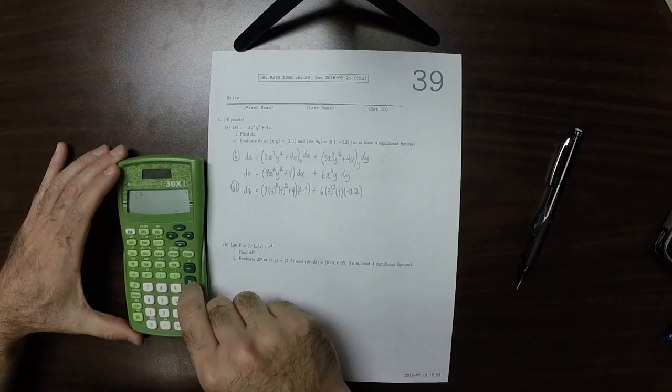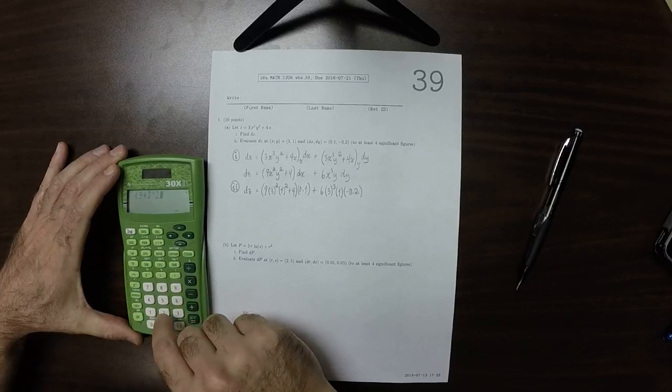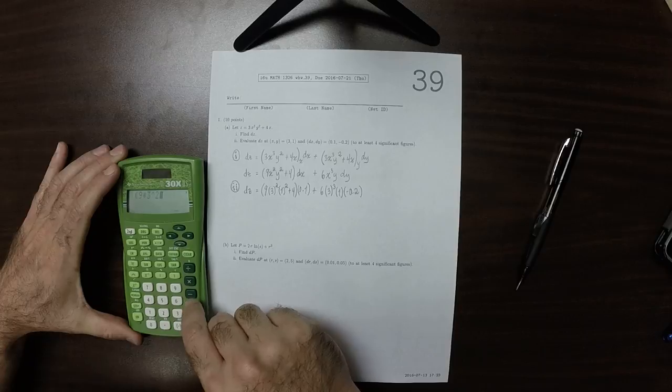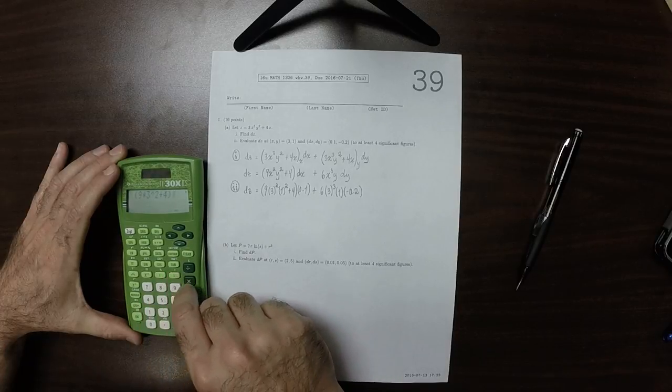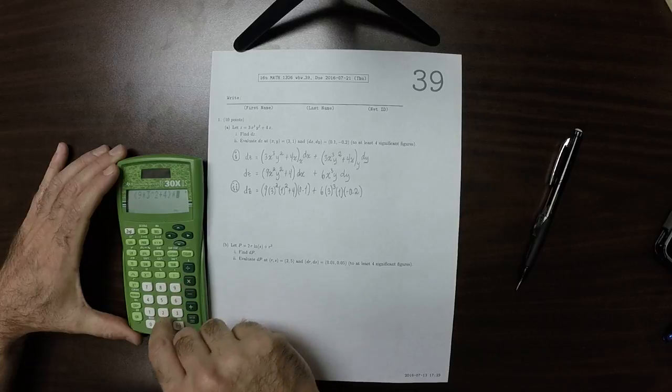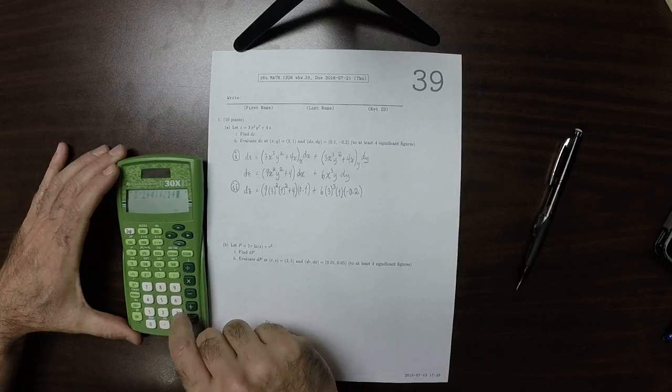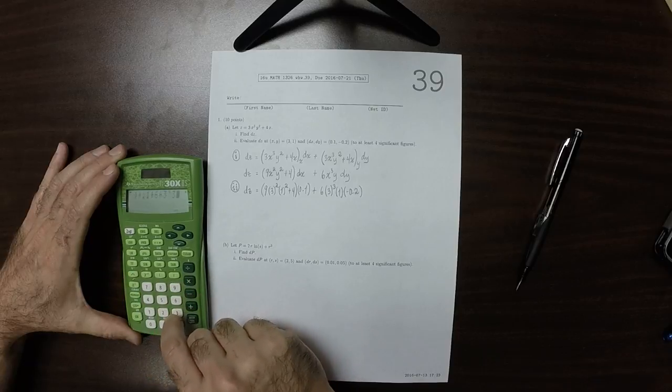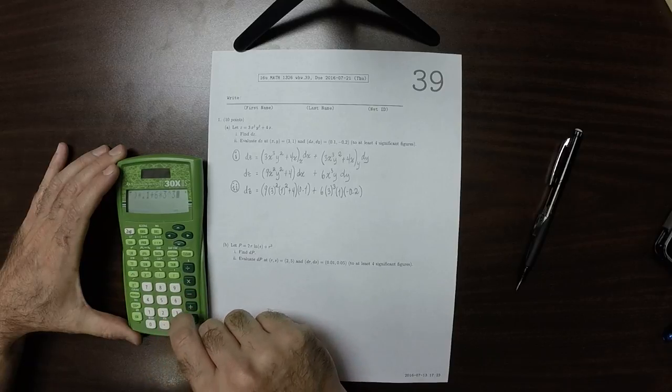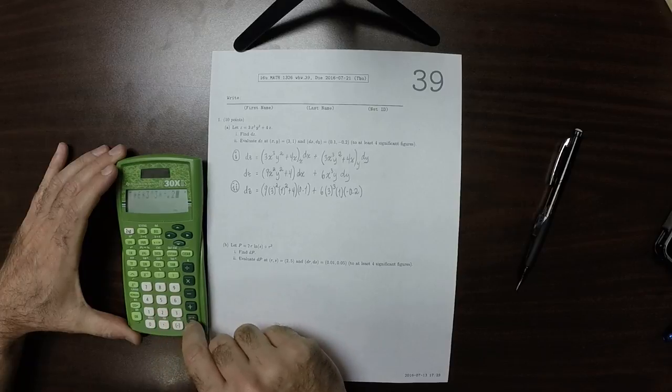So 9 times 3 squared is 81, then plus 4 times 0.1, plus 6 times 3 cubed times negative 0.2.